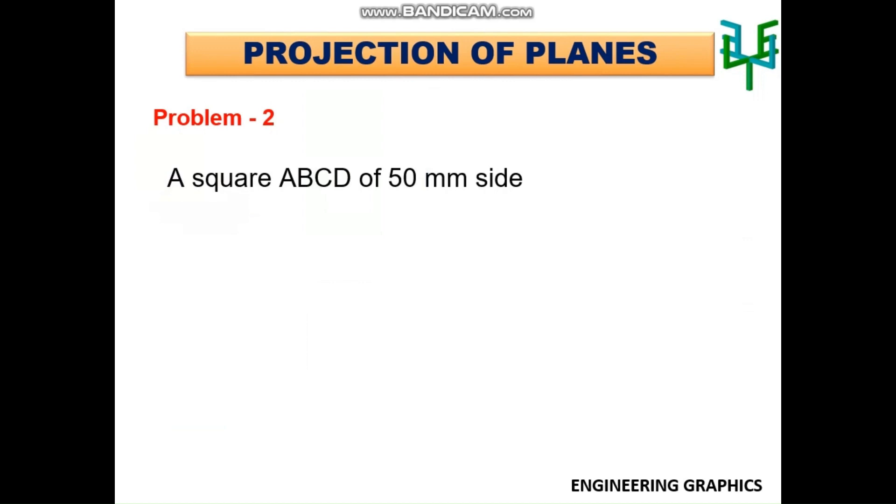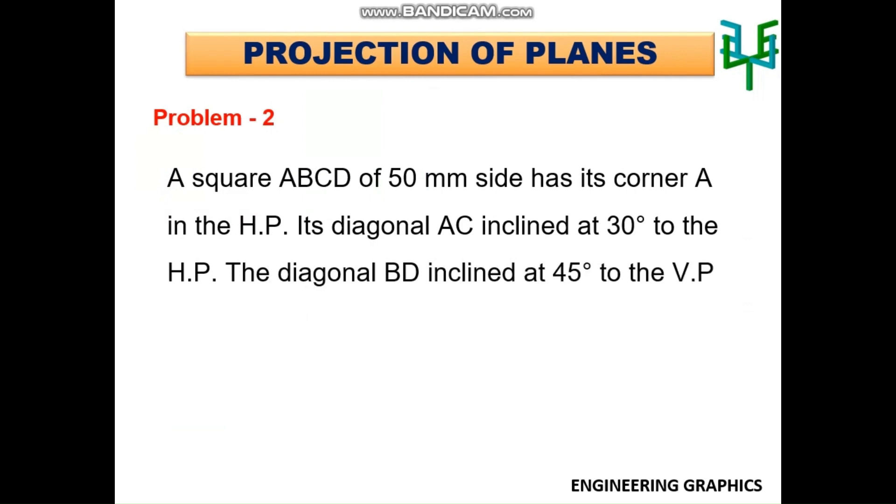A square ABCD of 50mm side has its corner A in the HP. Its diagonal AC inclined at 30 degrees to HP, the diagonal BD inclined at 45 degrees to VP, and parallel to the HP. Draw its projections.